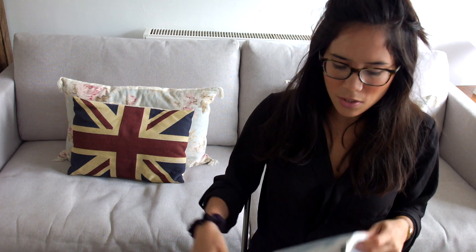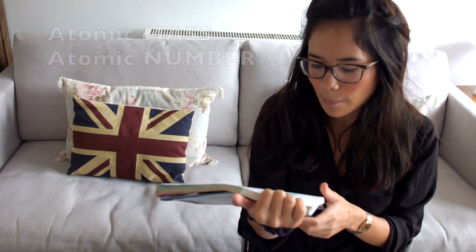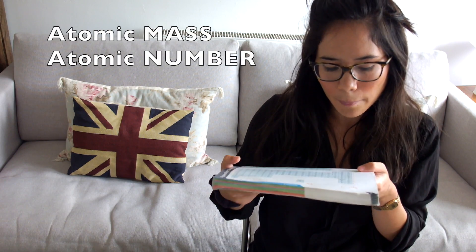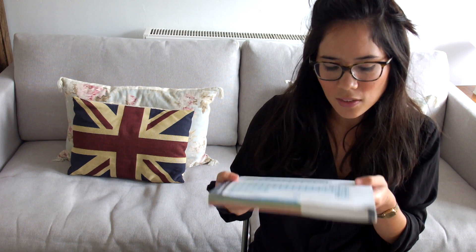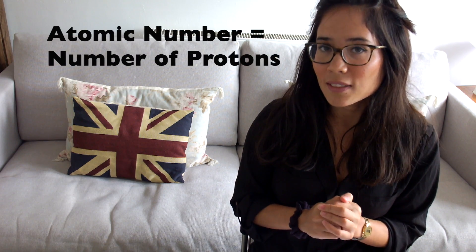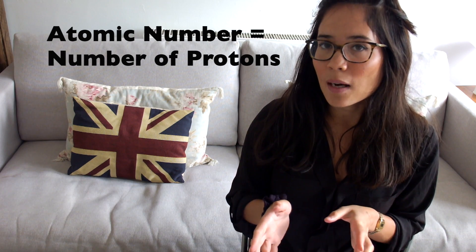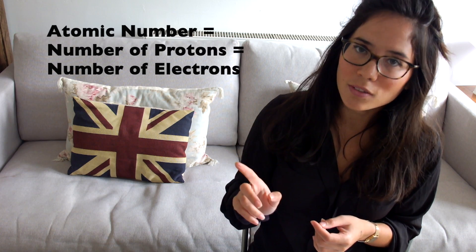When we look at our periodic table, there's a little key, and we can see that we have a relative atomic mass number and an atomic number, and we can use that to work out lots of things from the periodic table. The atomic number — and this is your key definition — is the number of protons within an atom. That's what you'd write in the exam, but it's worth bearing in mind that it's also the same as the number of electrons.